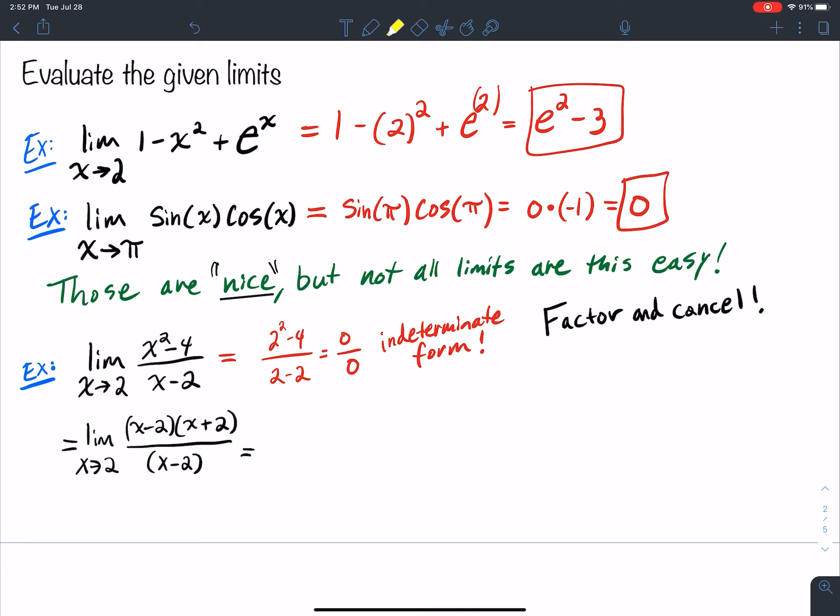So when I factor the numerator, this is a difference of squares. So that factors at x minus 2 times x plus 2. And if you're having trouble factoring difference of squares, you can go to my college algebra videos and look up section, I think, 1.5, and it's how to factor.